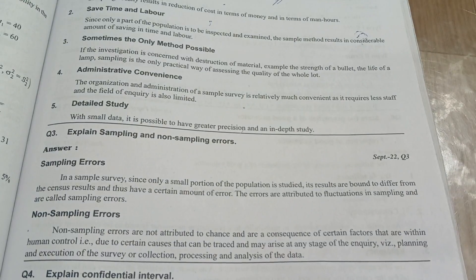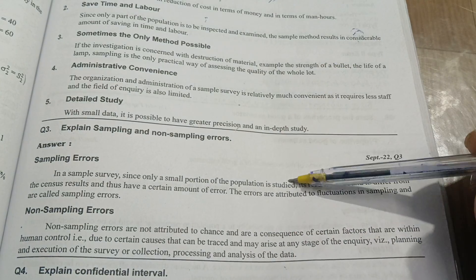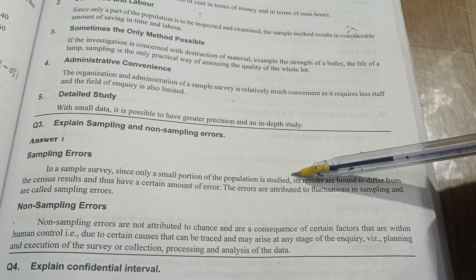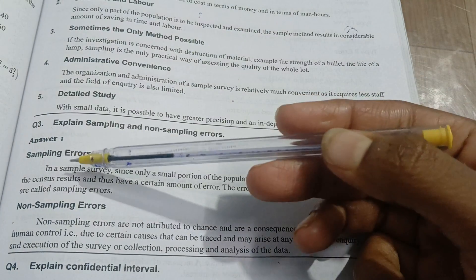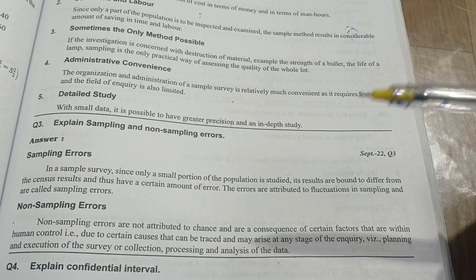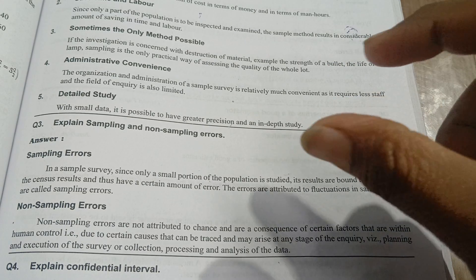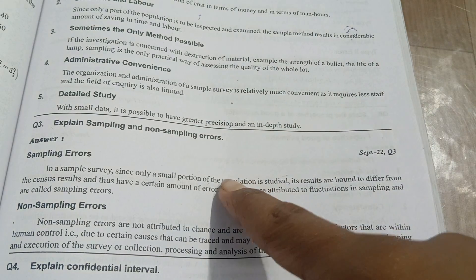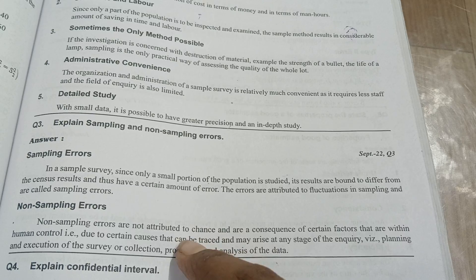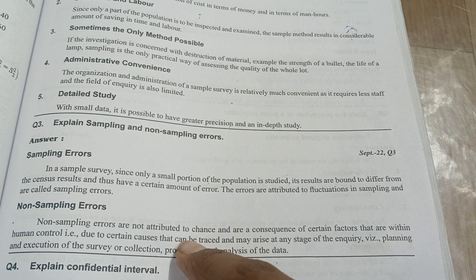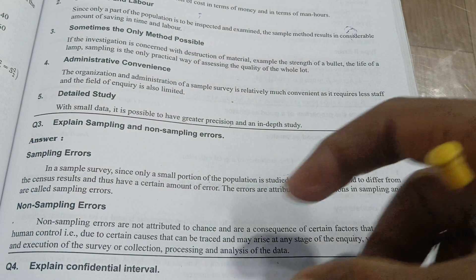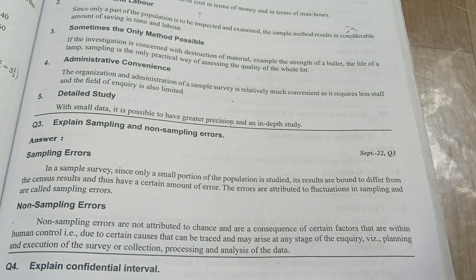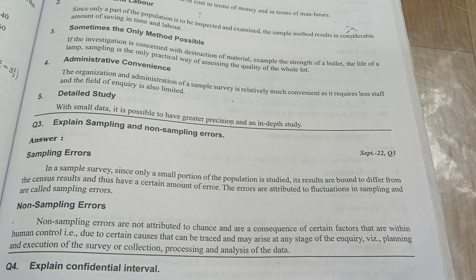Next, explain sampling and non-sampling errors. Sampling error is that since only some portion of the population is studied, results are bound to differ from the census results, having a certain amount of error. When you are taking sampling errors, we are taking only some part of the population, and with that part we are taking the entire answer. That time you have an error chance. But non-sampling errors are not attributed to chance. Whatever sequence is there, it will have the planning, executing, collecting the data, analyzing the data, processing the data, everything.